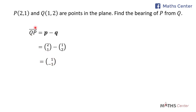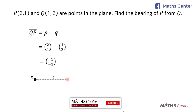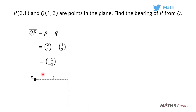We now have to find the direction of this vector KP. The components of the vector KP are (1, -1). This means that if we want to move from point K to point P, we first have to move one unit towards the right and then one unit downwards. The 1 means we move one unit right, and the negative 1 means we move one unit downwards, and that will bring us to point P.